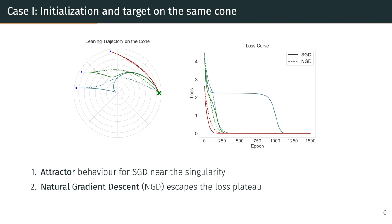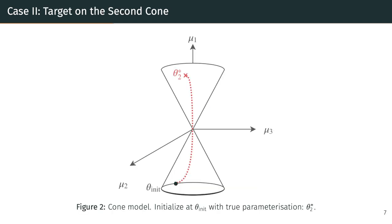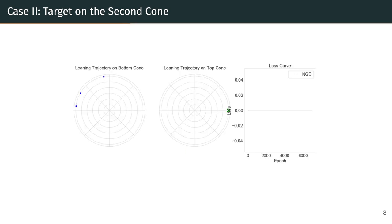This brings up the question: why do we need to study ways to avoid singularities if natural gradient descent seems to avoid this attractor behavior? We can build a very simple example where natural gradient descent fails. In contrast to earlier, we now consider that the initialization of the parameters and the true parameterization are on two different cones. We see here the initialization on one cone on the left and the true parameterization on the second cone on the right.